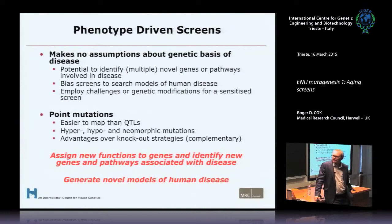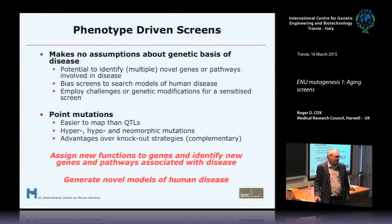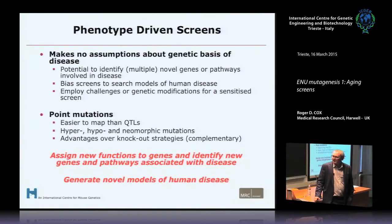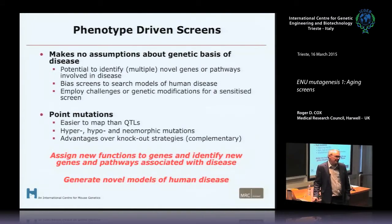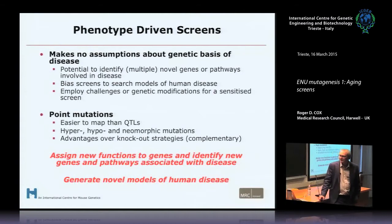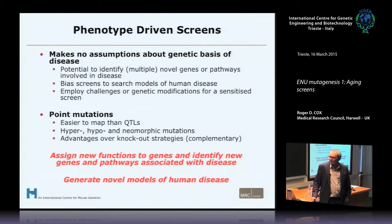These point mutations are relatively easy to map and to identify by next-generation sequencing. They generate different types of alleles — hypomorphs, hypermorphs, neomorphs — and they are complementary with knockout strategies. When you make a knockout mutation, you lose the function of a gene, but that doesn't happen that often in human populations; it's more frequent to find point mutations.